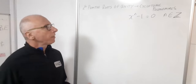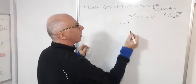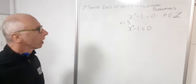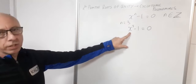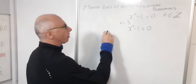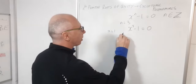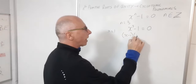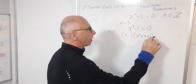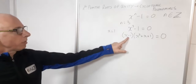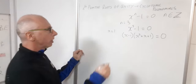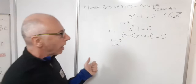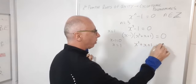For example, if n equals three we're looking for solutions to x cubed minus one equals zero. We know x equals one is a solution, so we can factor out (x minus one), leaving us with x squared plus x plus one equals zero.